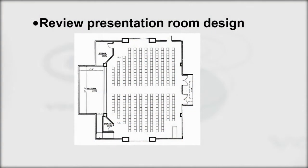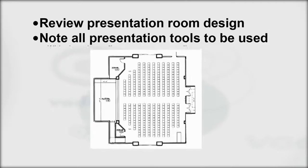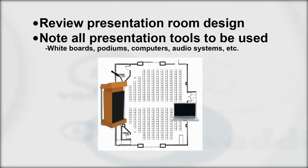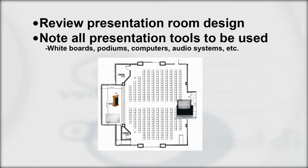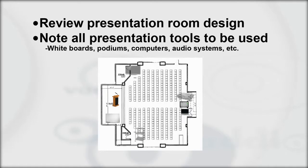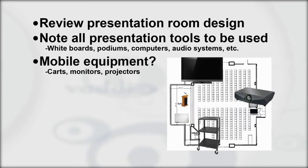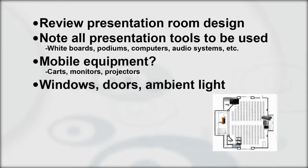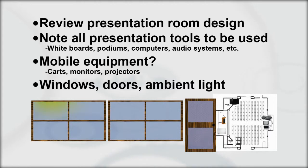Review the current or planned presentation room design. Note all existing and future presentation tools to be used in the room — examples being whiteboards, podiums, computers, audio systems, etc. Determine if there is any equipment that may be mobile or moved around easily. Be aware of window and door locations, and identify any sources of ambient light.